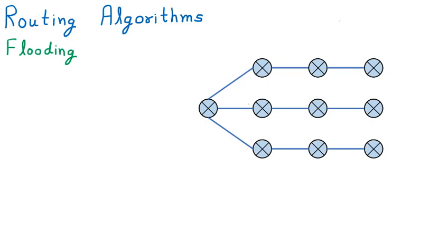Just like water goes everywhere when a flood comes, similarly packets go everywhere. Let us take a diagram to understand. We have a source router, and then multiple routers: A, B, C, then D, E, F, and then G, H, I — so these are some routers available.